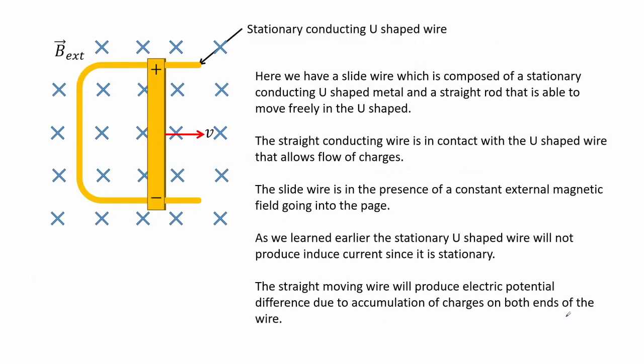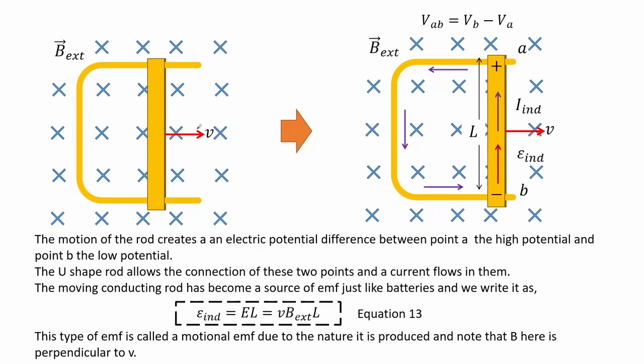Here we have a slide wire composed of a stationary U-shaped conducting metal and a straight rod that can move freely within it. The straight conducting wire is in contact with the U-shaped wire allowing flow of charges. The slide wire is in the presence of a constant external magnetic field going into the page. The stationary U-shaped wire will not produce induced current since it is stationary. The straight moving wire produces an electric potential difference due to accumulation of charges on both ends, creating a high potential at point A and low potential at point B. The moving conducting rod becomes a source of EMF, written as equation 13. This type of EMF is called motional EMF, and note that B here is perpendicular to V.